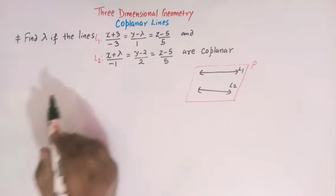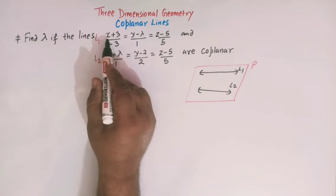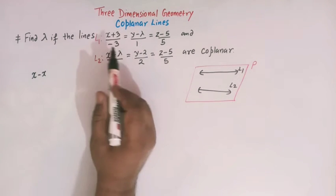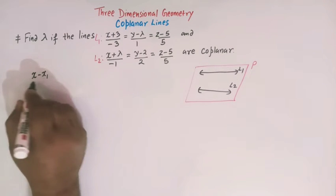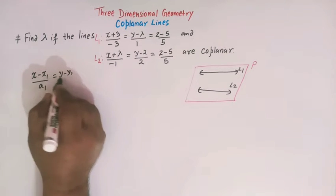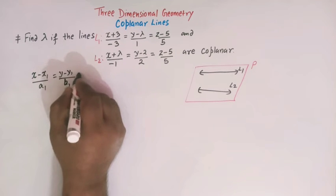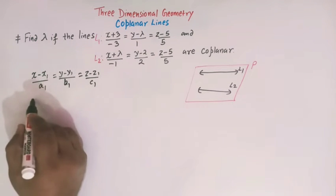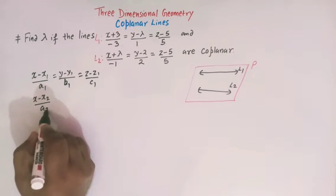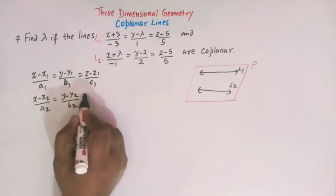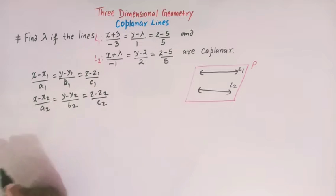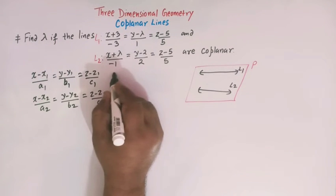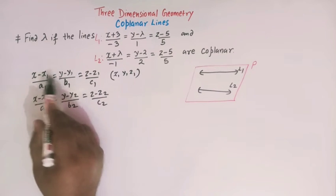To find the value of lambda for which these two lines are coplanar, we compare each line with the standard form of the equation of a line: (X - X1)/A1 = (Y - Y1)/B1 = (Z - Z1)/C1 for L1, and (X - X2)/A2 = (Y - Y2)/B2 = (Z - Z2)/C2 for L2.